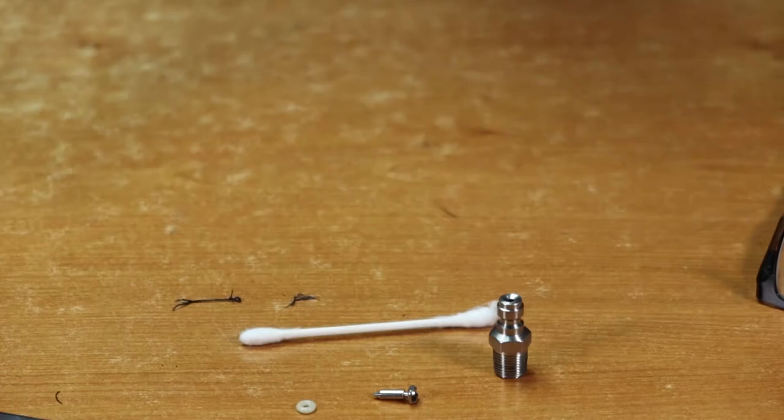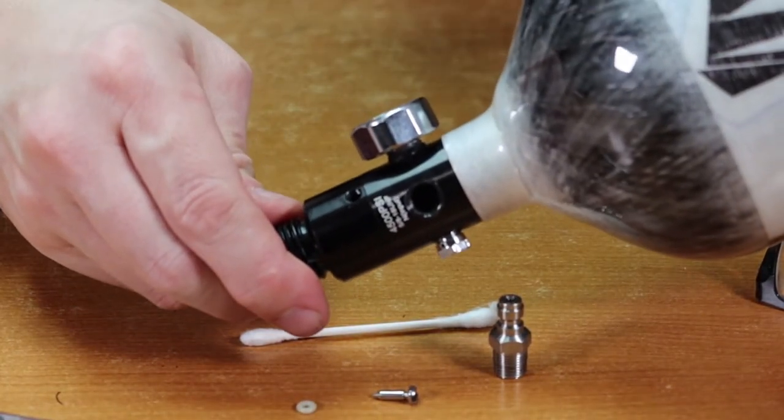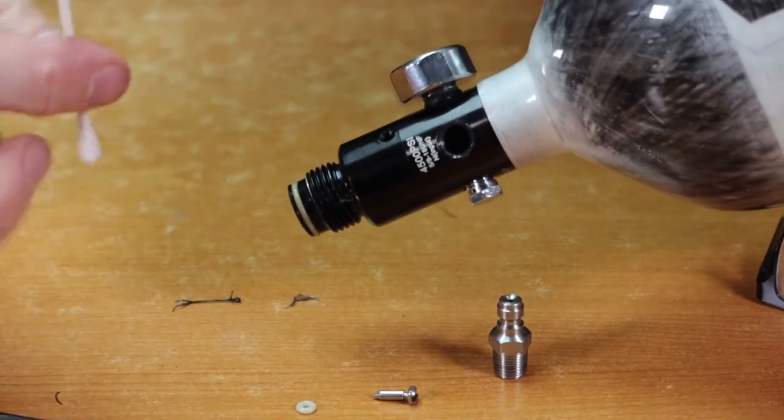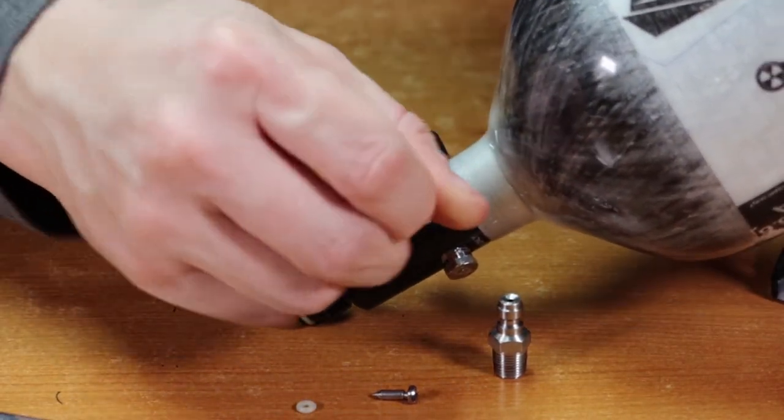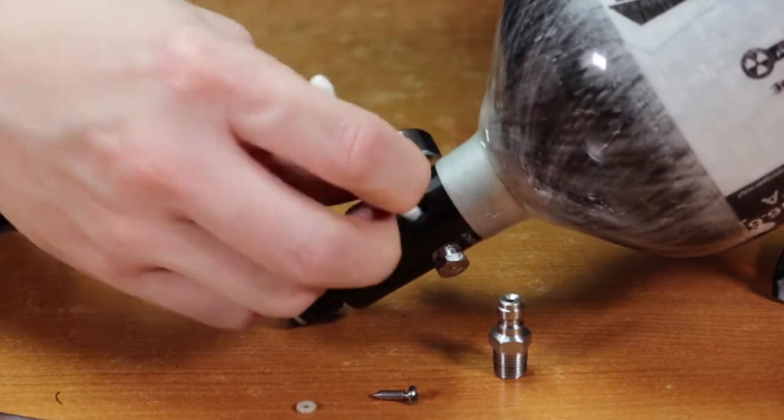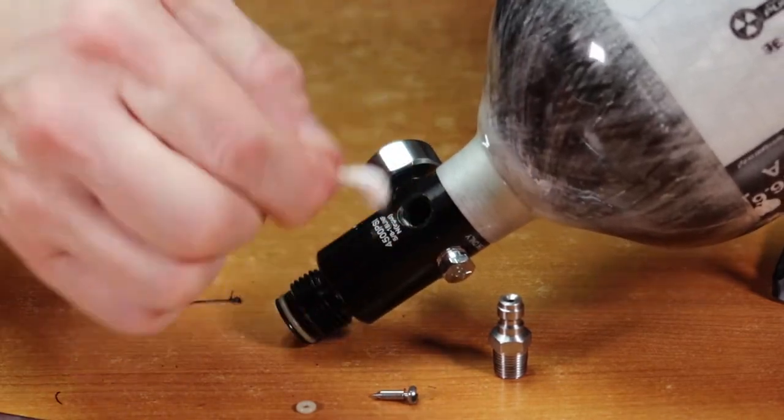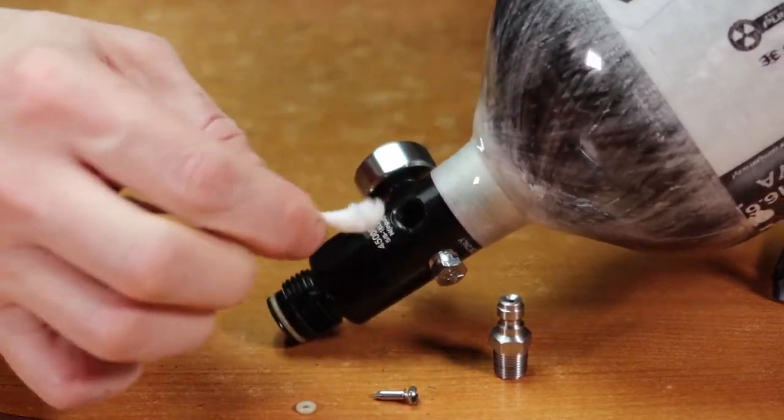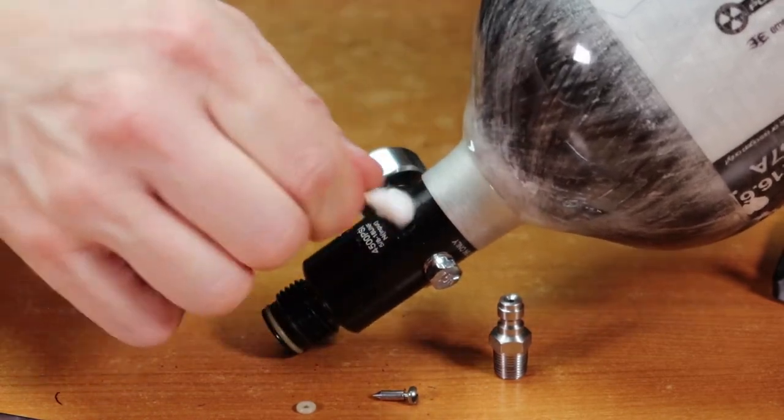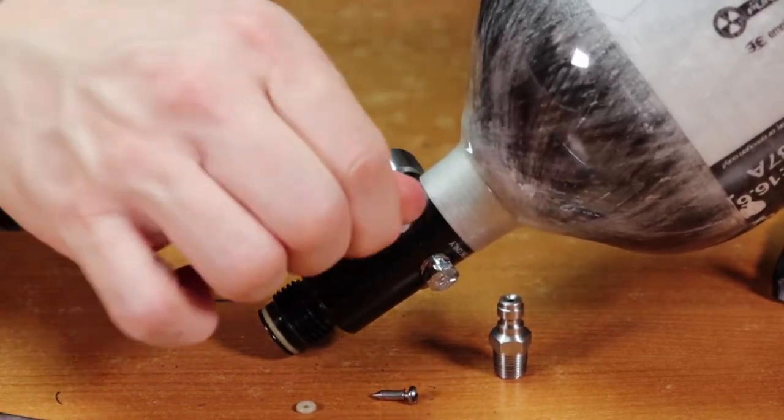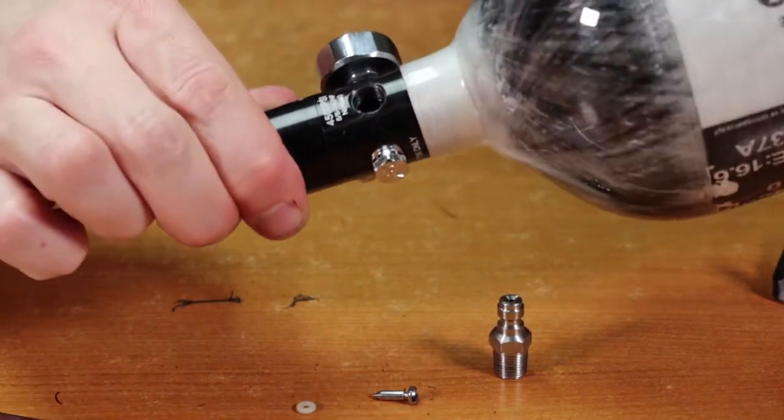Now is also a good time that you want to clean out the hole inside the regulator. So what you want to do here is take a Q-tip and run it around the inside of the hole, twisting and turning, cleaning out all the threads and just making sure that you don't have any extra Teflon tape residue in here that can find its way into the regulator propelled by 4500 PSI of force, damaging the internal components.